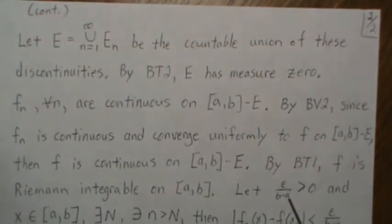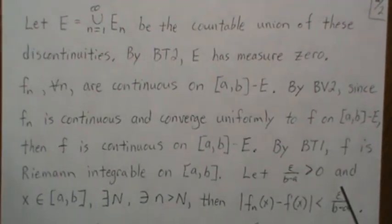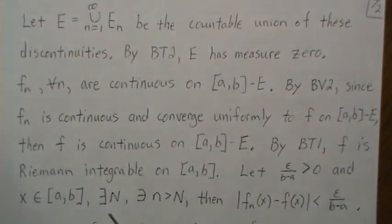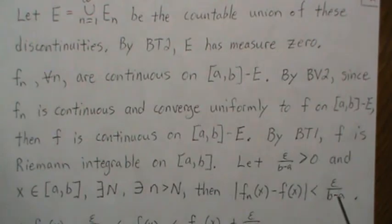So let epsilon over (b minus a) be positive and let's pick an x in [a,b]. Then there exists an N such that for little n bigger than N, this difference is really small. That is because f_n is a uniformly convergent sequence to f.